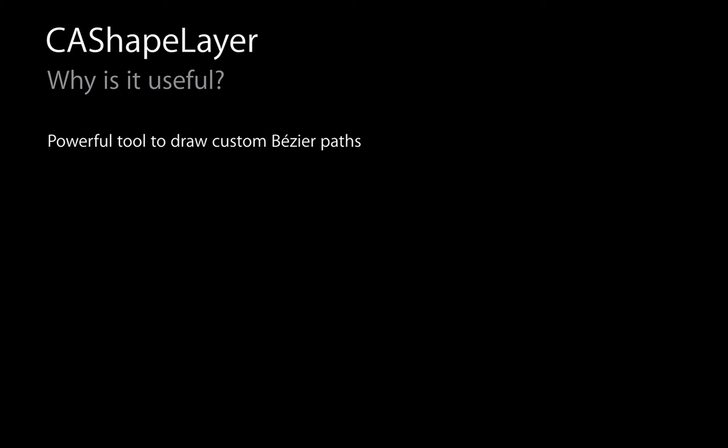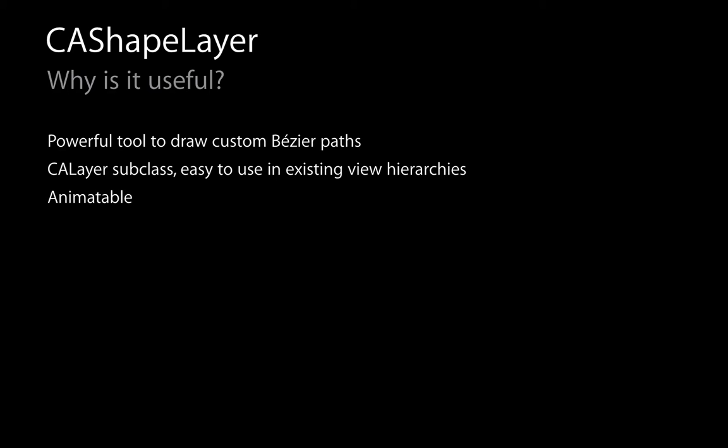Moving on, next we're going to talk about CA Shape Layer. CA Shape Layer is a really powerful tool for drawing custom Bezier paths within your application. As the name suggests, it's a subclass of CA Layer, which makes it very easy to use in existing view hierarchies — all views on iOS are already backed with CA layers. The other really powerful part is that all properties controlling its appearance are animatable.